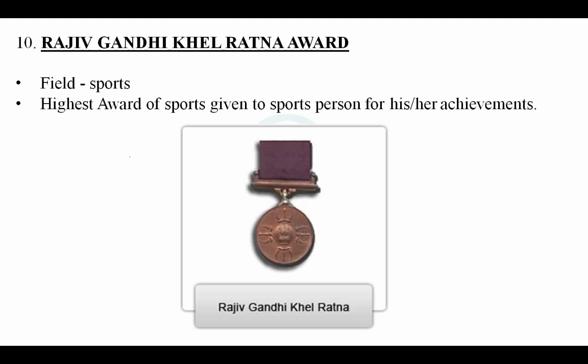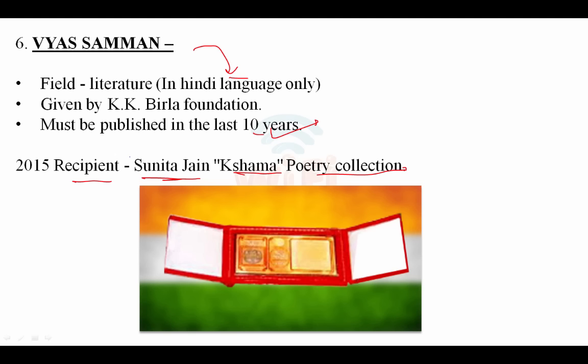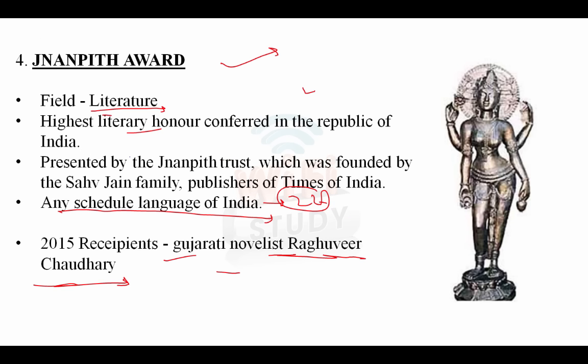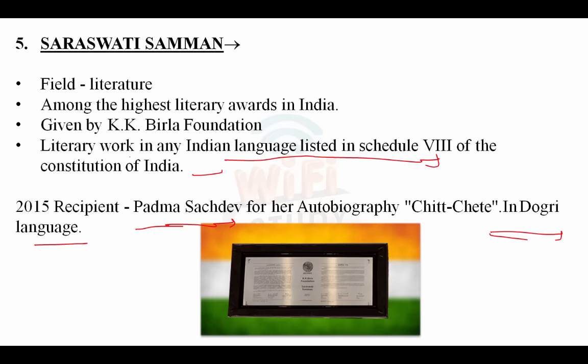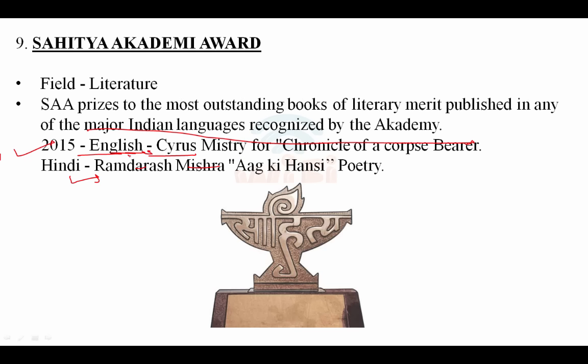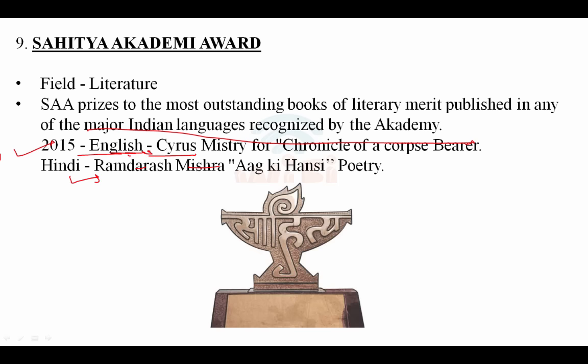So all these are the important awards from the literature category: Sahitya Akademi, Moorti Devi, Bihari Puraskar, Vyasa Samman, Saraswati Samman, and Jnanpith Award. Before that we covered the Indira Gandhi Award for Peace, and now we move towards sports awards.